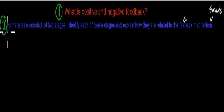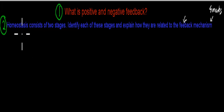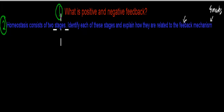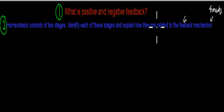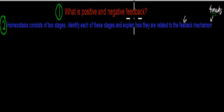I won't cover it in too much detail, just enough for you to appreciate what the feedback mechanism actually is. In this case, the question asked how homeostasis consists of two stages. Identify each of these stages and explain how they are related to the feedback mechanism. That was worth four marks. I'll start with the first question: what is positive and negative feedback?